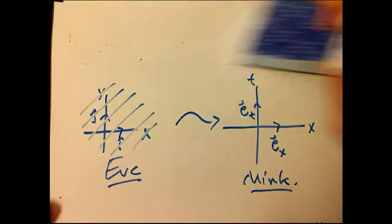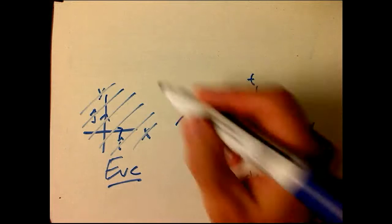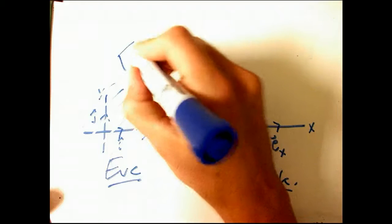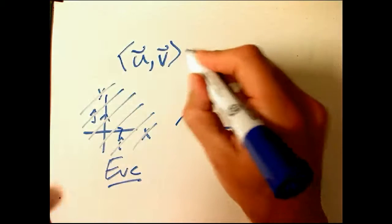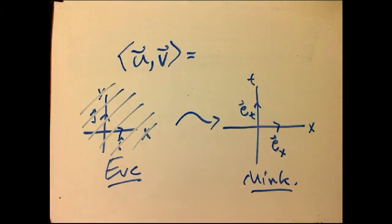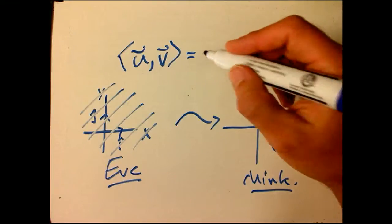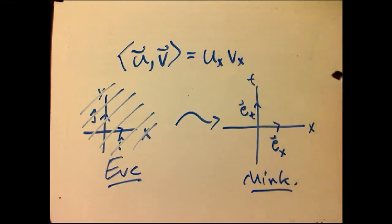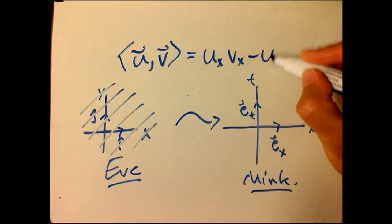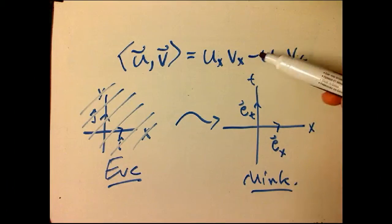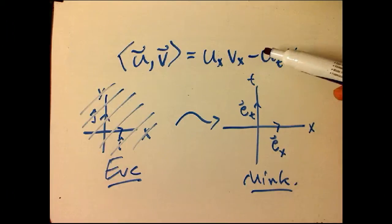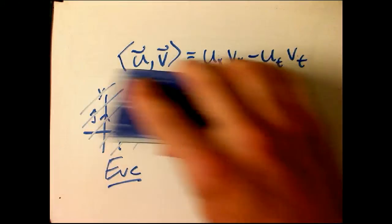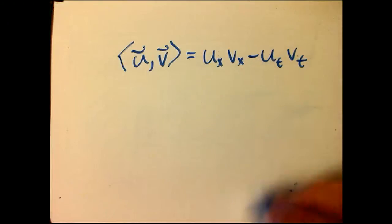What's the real change? The real change is that instead of the dot product, I'm going to change the notation here. I'm going to use angle brackets, and I'm going to define the Minkowski scalar product of u and v to be very simple. It's just the x-coordinates multiplied together minus the product of the t-coordinates. This is exactly the analog of the dot product, just changing a sign.